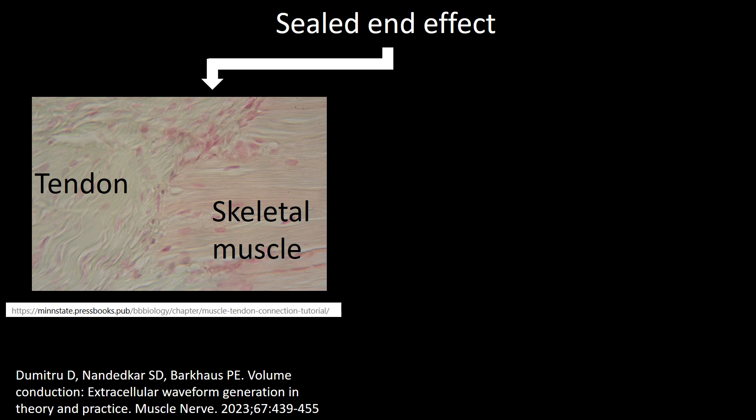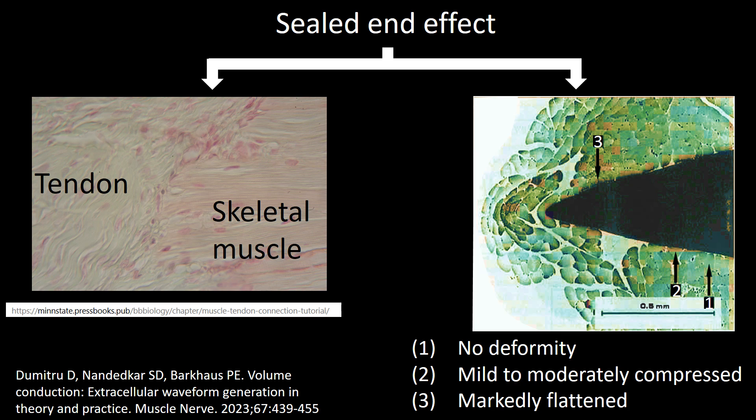We have just discussed the sealed end effect when it comes to the tendon-muscular junction, but the sealed end effect can also be brought about by the interaction of the EMG needle and muscle fibers. In such situations, the needle acts as a blocker, same as the tendon, but in addition as a recording device.